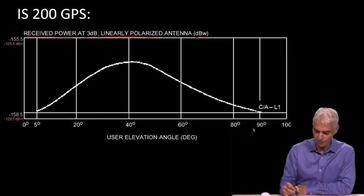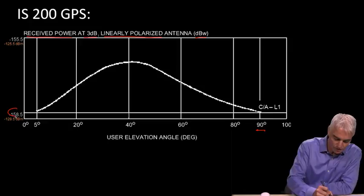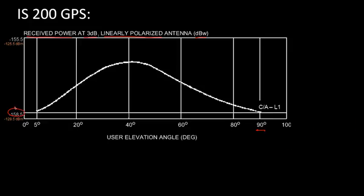And as you see here, they show versus elevation at an elevation of 90 degrees, they guarantee you will get -158.5 dB watts. And if we convert that to dBm, it means we just add 30. And so there's our number, -128.5 dBm. And at 5 degrees elevation, it's the same thing. As you see, we get that value there or that value there.